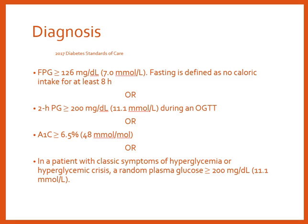A fourth diagnostic criterion applies when patients have classic symptoms of hyperglycemia or a hyperglycemic crisis: a random plasma glucose above 200 mg/dL. Random plasma glucose has no regard for when the person last ate. These are the diagnostic criteria, and we'll also look at typical blood sugar goals — numbers patients will need to work with.